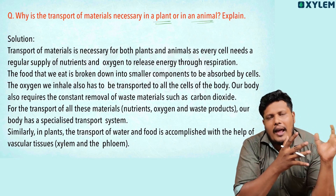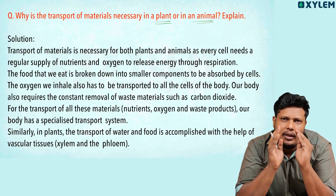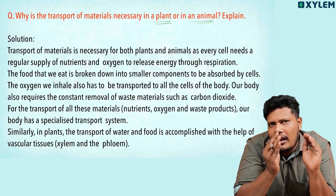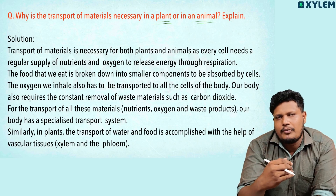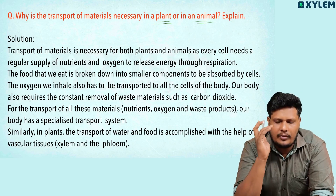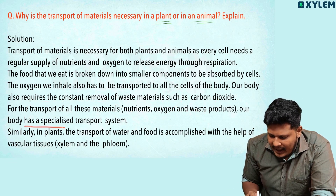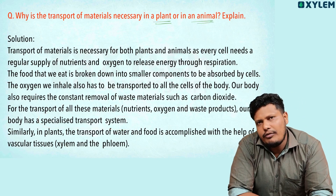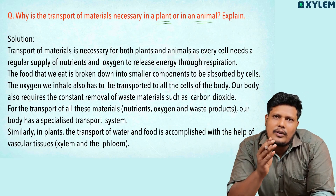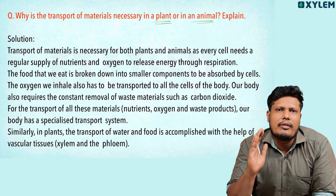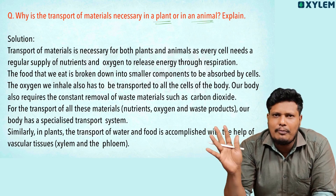Our body also requires constant removal of waste material. Waste material like carbon dioxide must not accumulate in our body, so at regular intervals these waste materials need to be removed. Transportation is important for the transport of all these materials — like nutrients, oxygen, and waste products. Our body has a specialized transport system, and in the case of animals or human beings, that system is called the circulatory system.